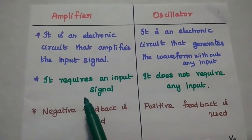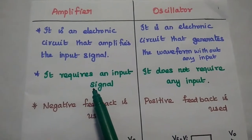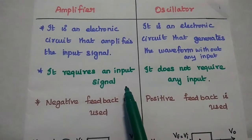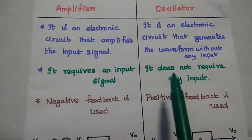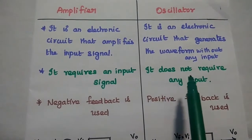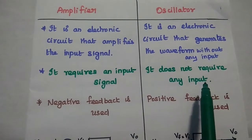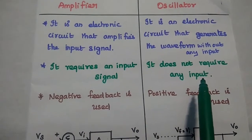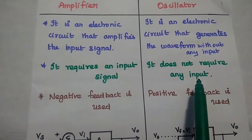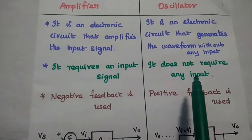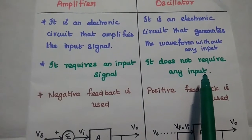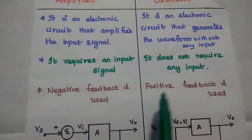An amplifier requires an input signal to be amplified. An oscillator does not require any input signal — without any input signal, it can self-generate the output waveform.